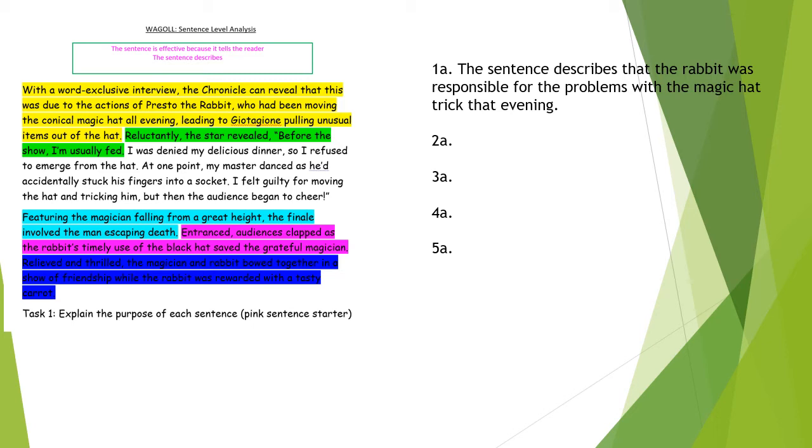So you can see from my yellow one: 'With a world exclusive interview, the chronicle can reveal that this was due to the actions of Presto the rabbit, who had been moving the chronicle magic hat all evening, leading to Digione pulling unusual items out the hat.' Let's analyze the language in that sentence first. World exclusive interview means that only they have this information. The chronicle, that's the name of the newspaper.